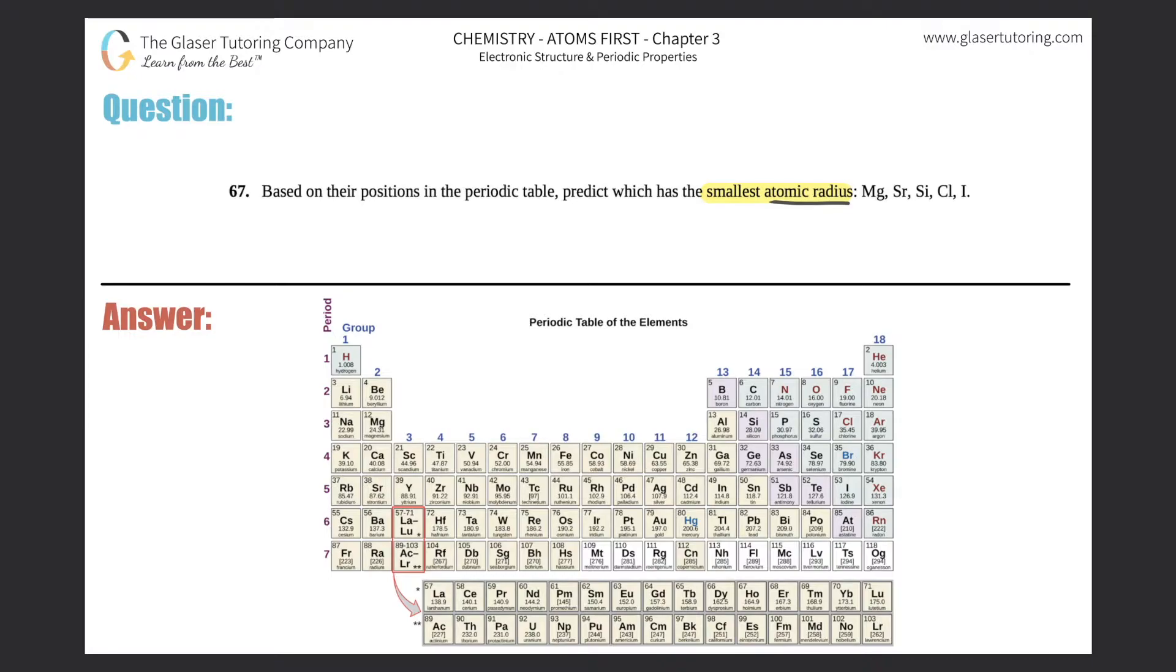Here it is: If you go across a period—and periods go from left to right—atomic radius will decrease. So you start big, your atoms would be bigger, and then as you move across the periodic table, your atoms get smaller and smaller.